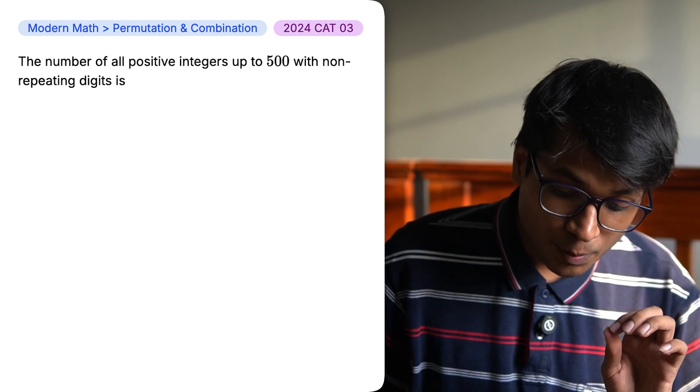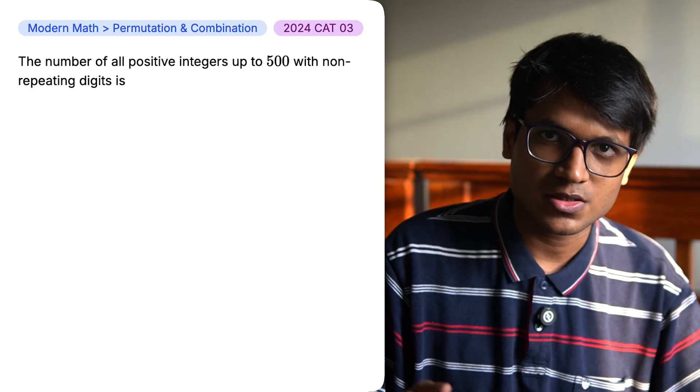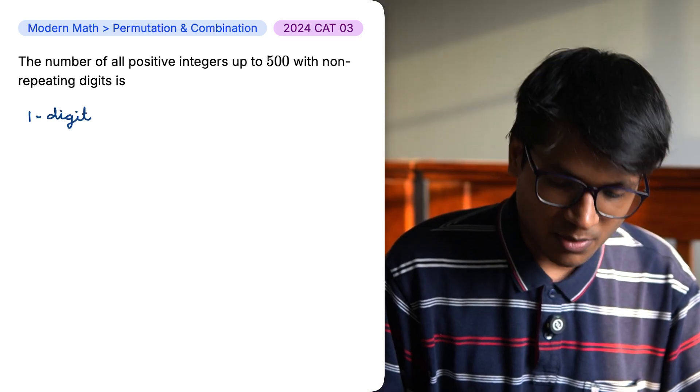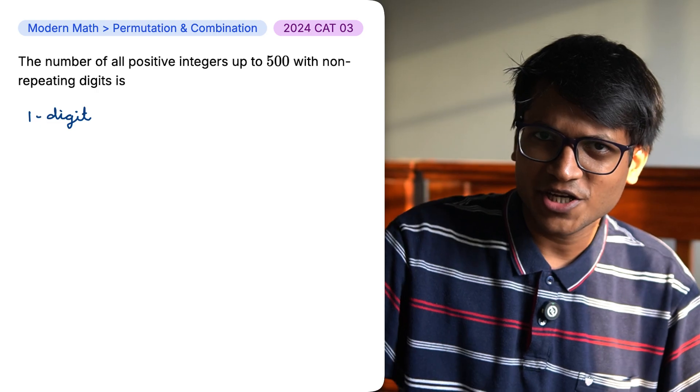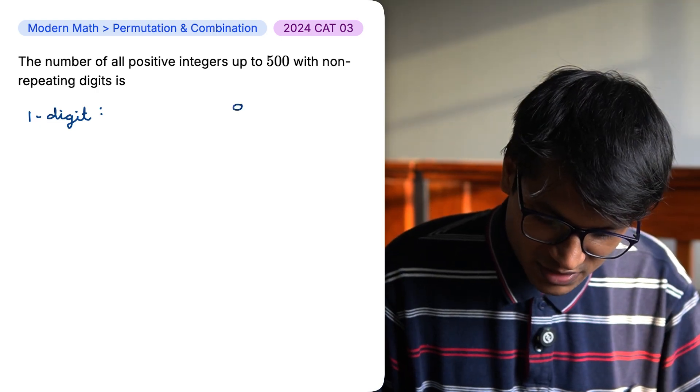The number of all positive integers up to 500 with non-repeating digits is. So if I have a single digit number, I can have 1 to 9. I cannot put a 0 because the question says positive integers. I have 9 cases.